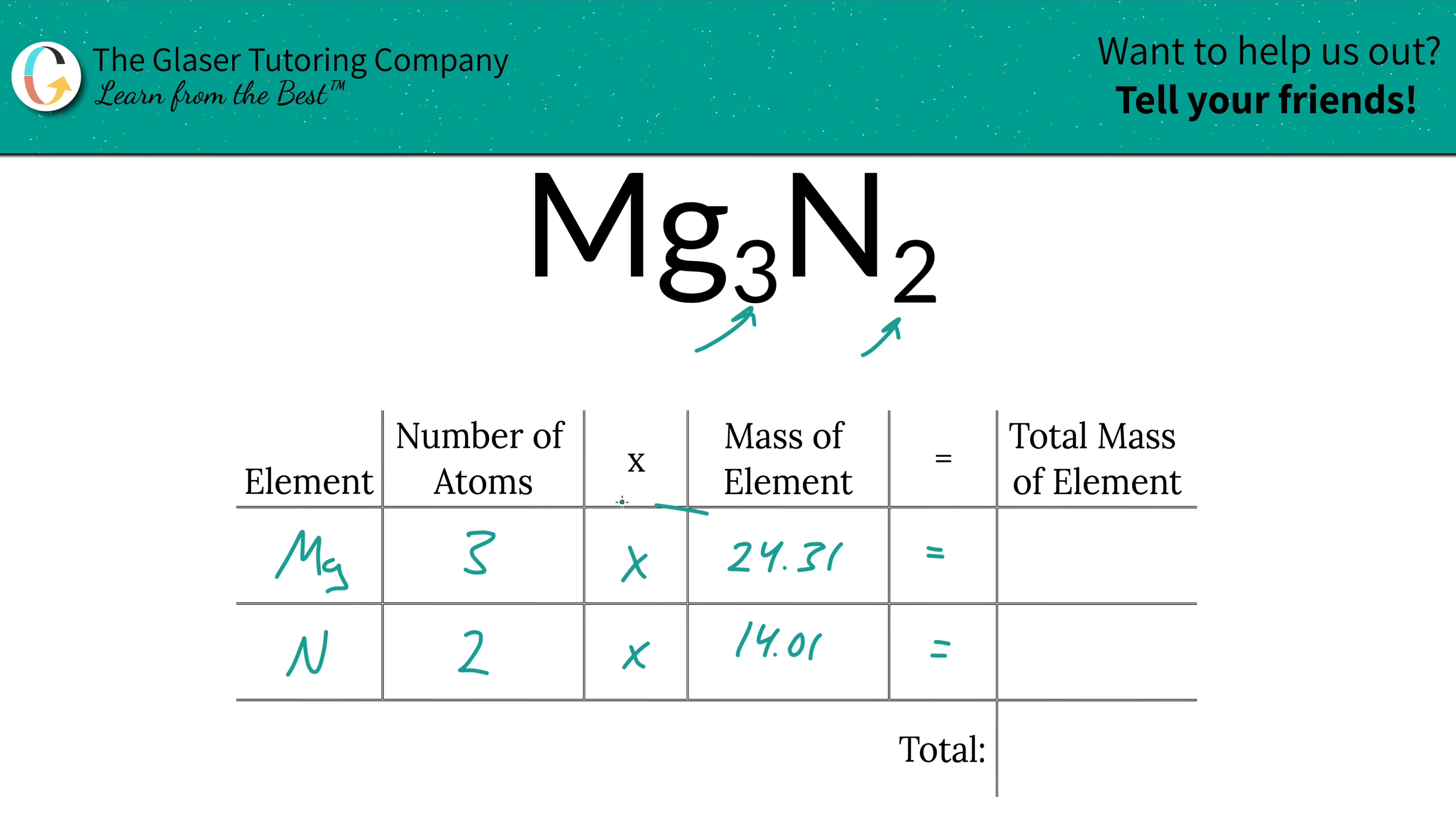Then to find the total mass of the element, we simply have to multiply this row across. So there's going to be 72.93 units of mass for magnesium and the nitrogen is going to be 28.02.